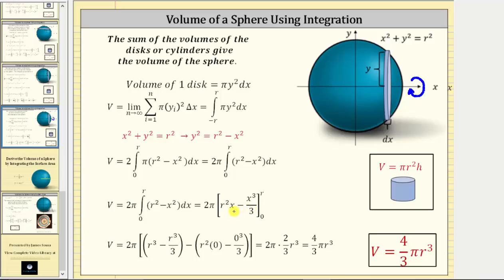From here, we need to find big F of b minus big F of a, or in this case, big F of r minus big F of zero. To begin, we substitute r for x, which gives us r squared times r, giving us r cubed,